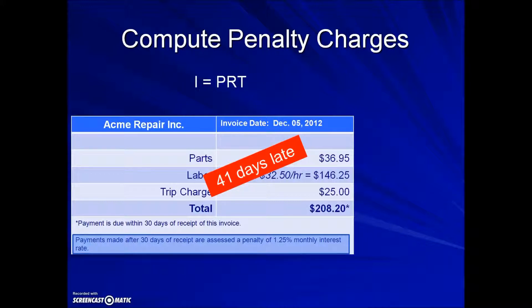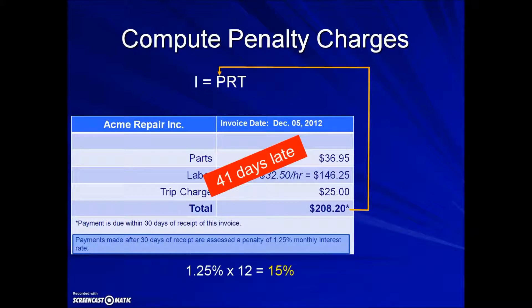Again using the simple interest formula, the amount of the principal will be the invoice total. The rate needs a little adjustment — since it's listed as monthly, we need to determine the equivalent annual interest rate by multiplying by 12, since there are 12 months in a year. The result is 15%. The time also needs to be converted into a portion of a year.